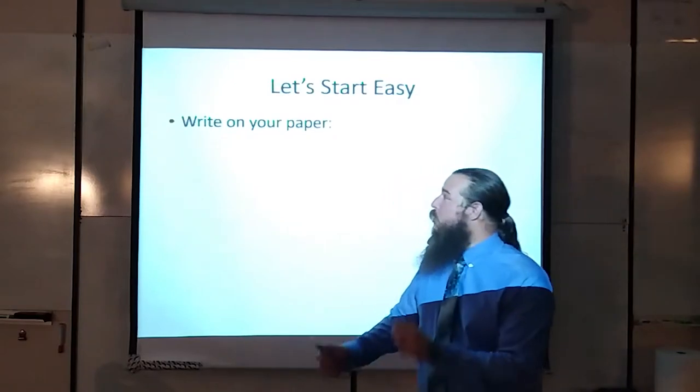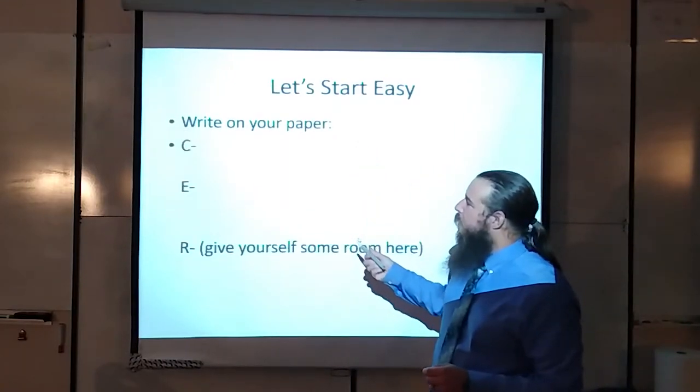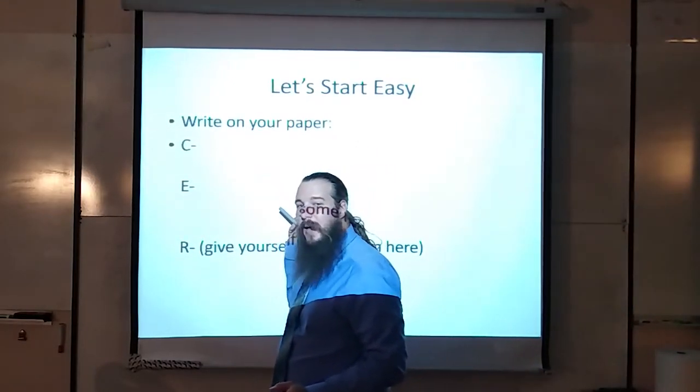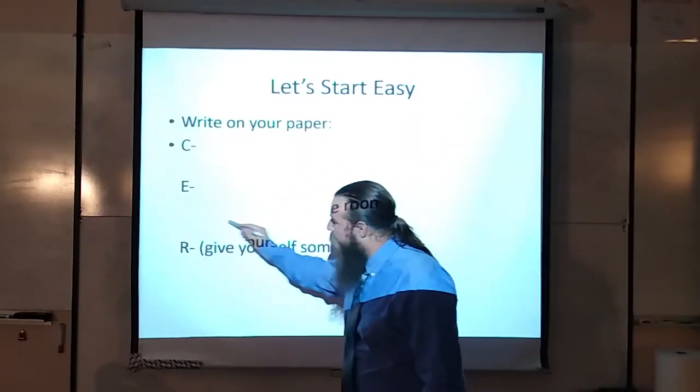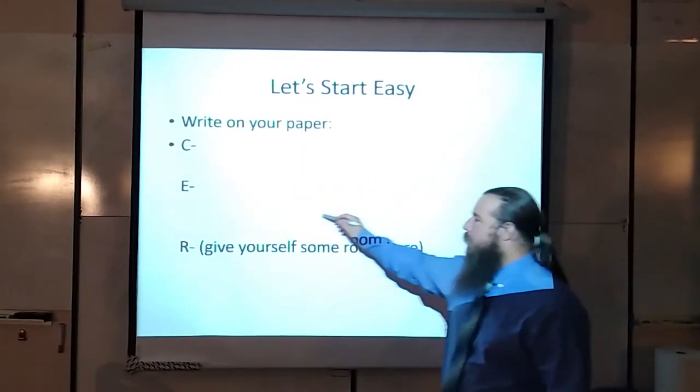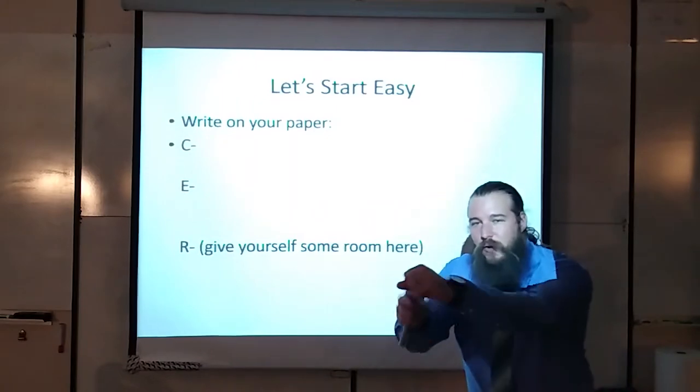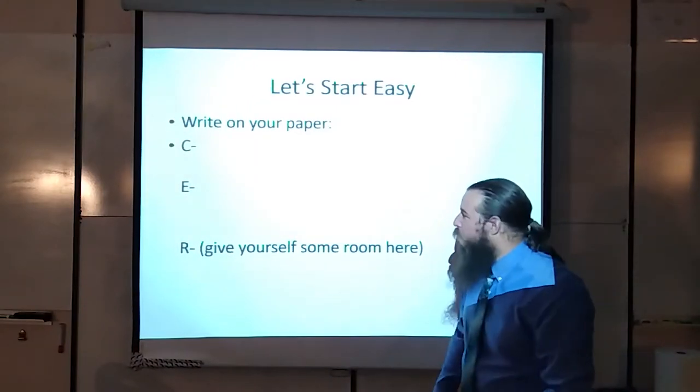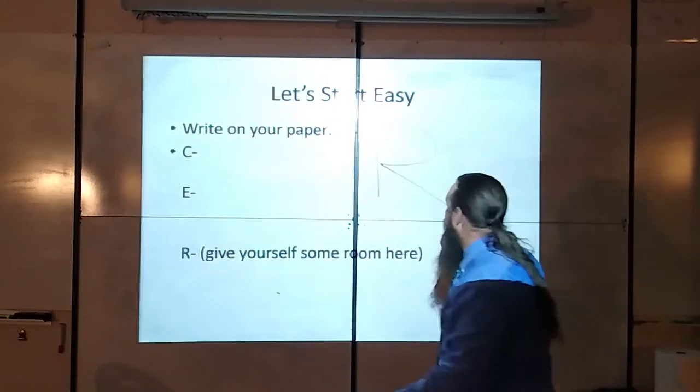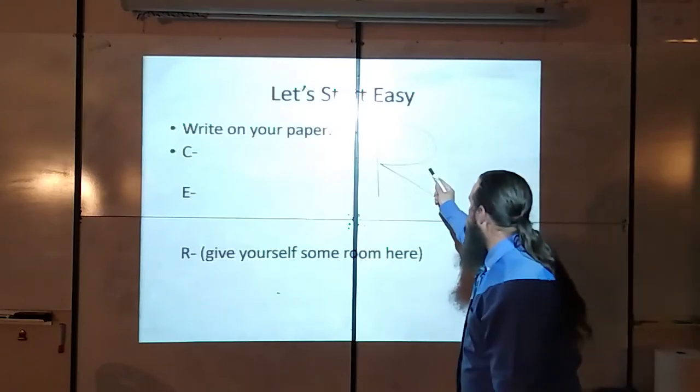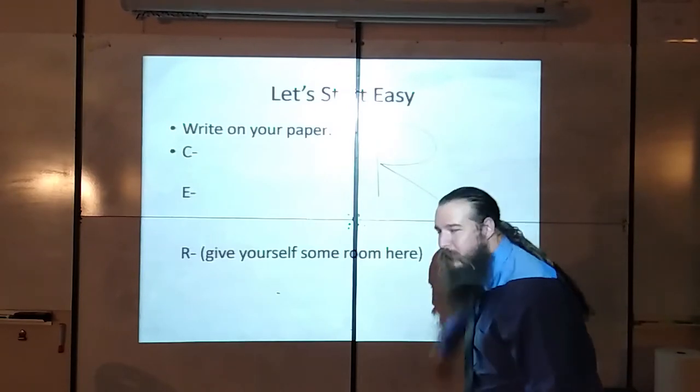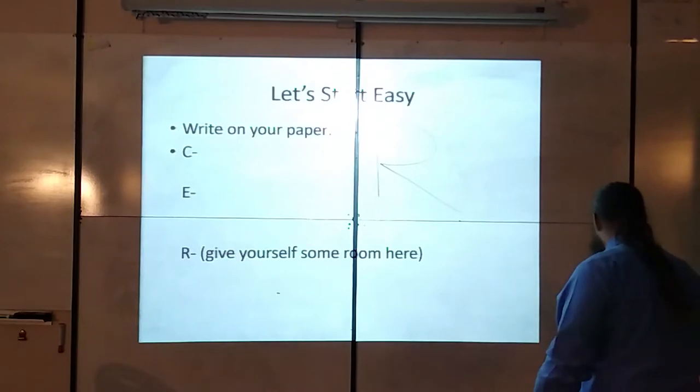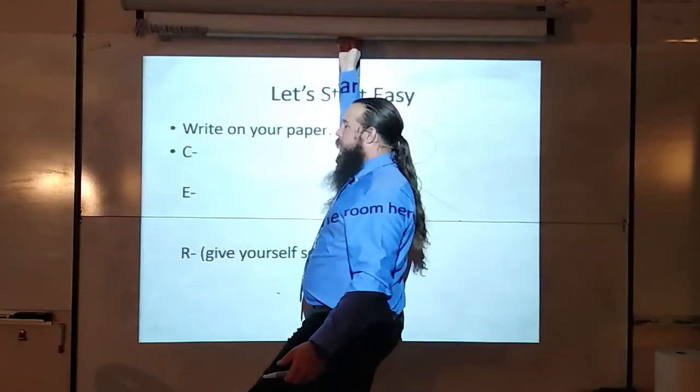Anytime you're going to answer a Claim, Evidence, Reasoning question, you should start out by giving yourself a lot of room on your paper and writing a big C for your claim, big E for your evidence, and then a big old R. And by big old R, I mean give yourself a lot of space on the paper. Don't just go, I drew a really large R. What? No. A lot of space, not a really big R.